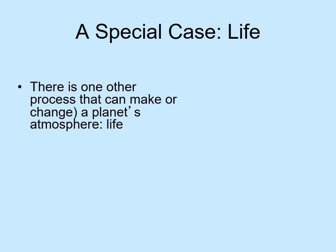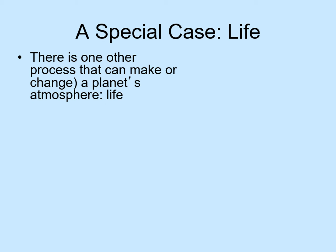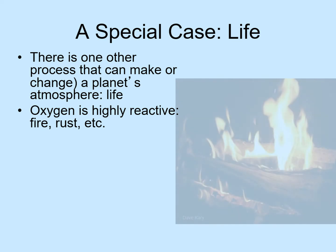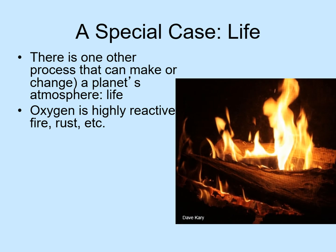Besides the four sources of gas we just looked at, there is one more process that can add gas to an atmosphere, and that's life. An example of the importance of life on a planetary scale here on Earth comes from considering oxygen, the second most abundant gas in our atmosphere. Free oxygen is a highly reactive chemical. Given half a chance, it will combine with other elements in the environment. Some of the processes we see here on Earth that use up oxygen include both rusting and fire. In fact, the Earth is the only place in the solar system where you could light a match — everywhere else, there isn't enough free oxygen to feed the flame.